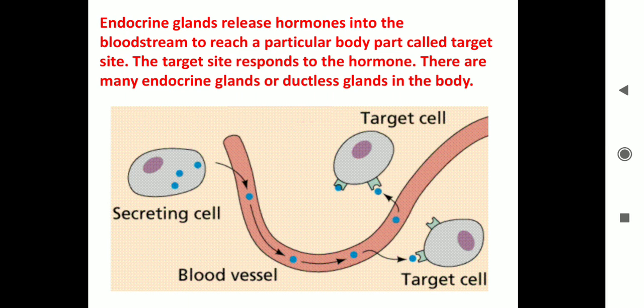Endocrine glands release hormones into the bloodstream to reach a particular body part called the target site. These are called target sites, and this target site responds to the hormones. There are many endocrine glands, also called ductless glands, in our body of these types.